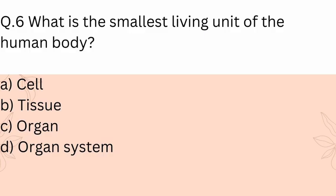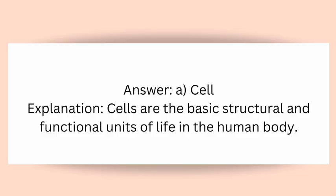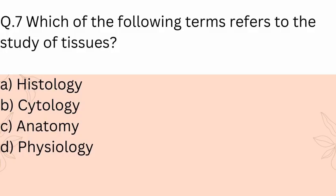Question 6: What is the smallest living unit of the human body? A) Cell, B) Tissue, C) Organ, D) Organ system. Answer: A) Cell. Explanation: Cells are the basic structural and functional units of life in the human body.